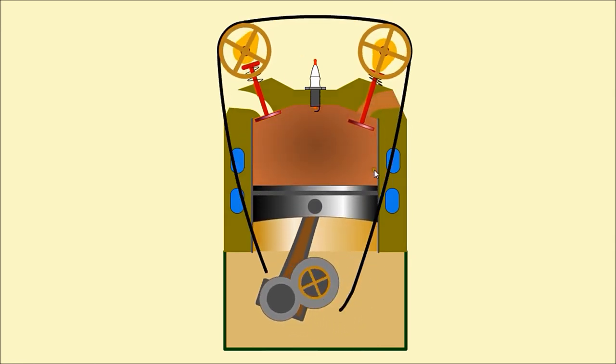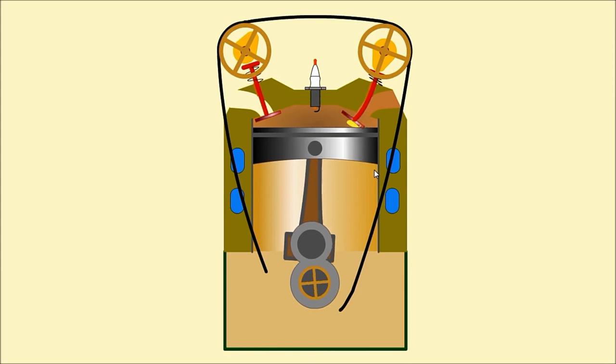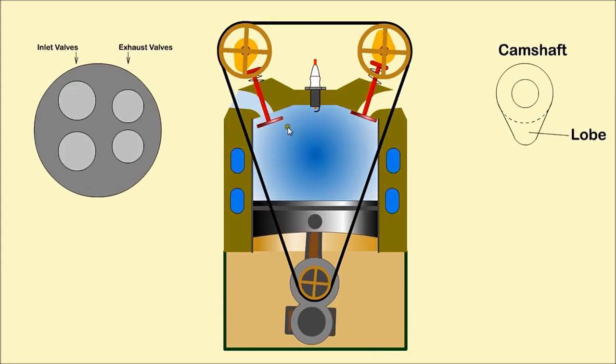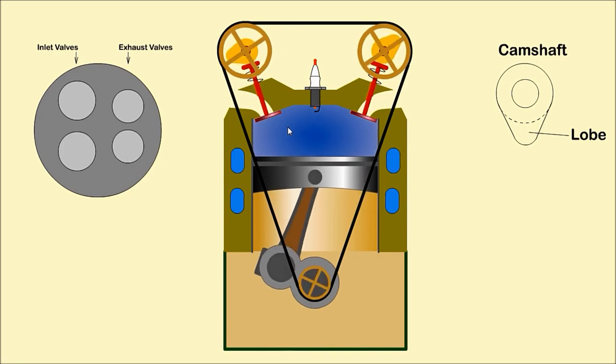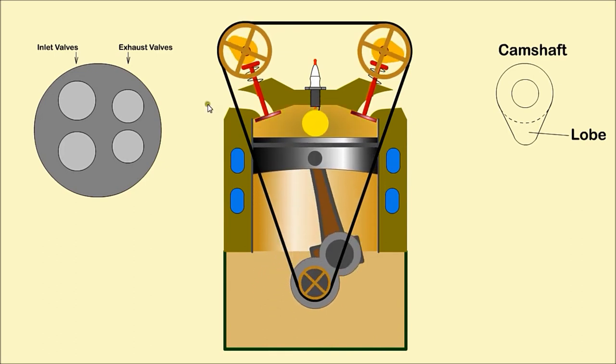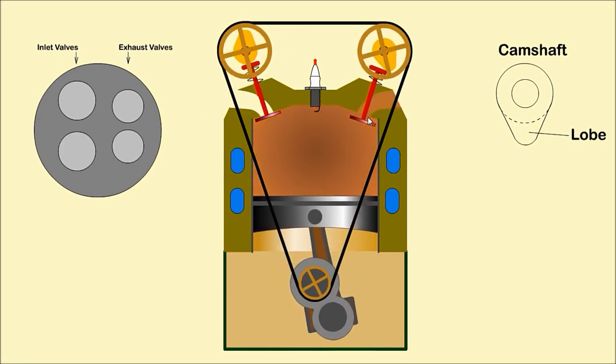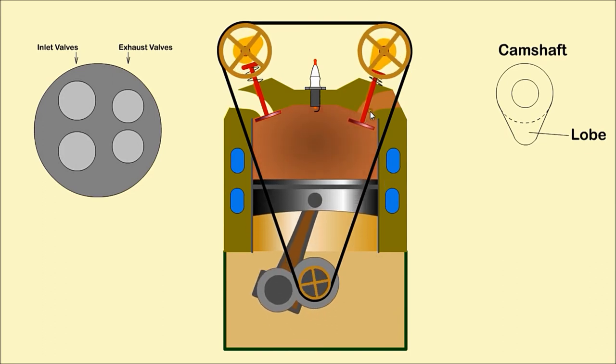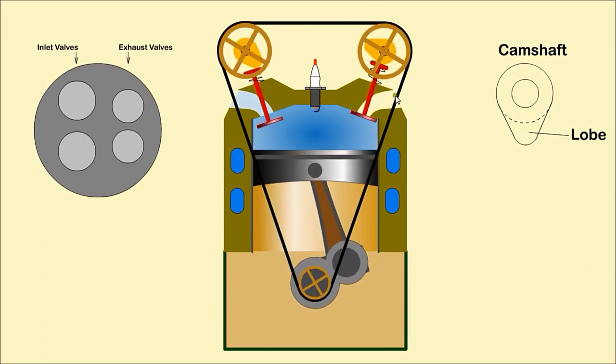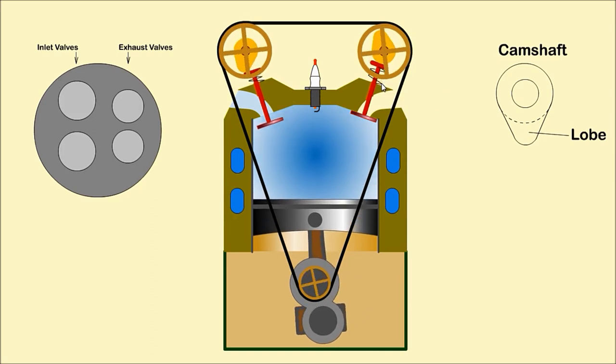Valves are used to allow air to enter and exhaust gas to exit from the cylinder. They are opened by the lobe on the camshaft and closed by spring pressure. Usually inlet ports are larger than exhaust ports as it is more difficult to get air into the cylinder.